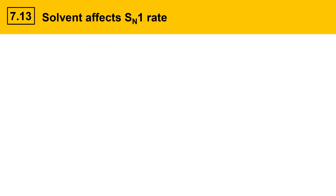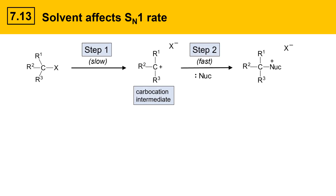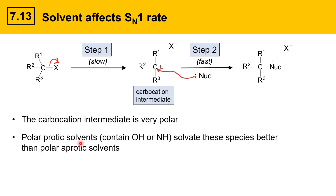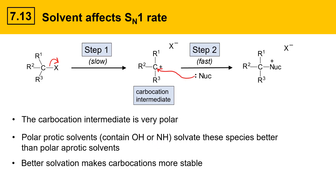Solvent also impacts the SN1 reaction rate. Here's the mechanism again, where the leaving group leaves in the first step and the nucleophile attacks in the second step. The carbocation intermediate is very polar — there's a positively charged carbon and a negatively charged anion. Polar protic solvents, which contain OH or NH, are better at solvating carbocations than polar aprotic solvents. This better solvation makes carbocations more stable, and that stability helps them form faster.